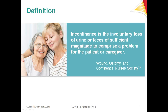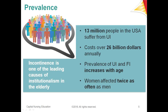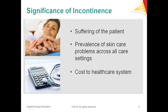Let's start with a definition of incontinence. Simply put, incontinence is the involuntary loss of urine or feces of sufficient magnitude to comprise a problem for the patient or the caregiver. The prevalence is amazing — over 13 million people in the United States suffer from urinary incontinence, costing over 26 billion dollars annually.